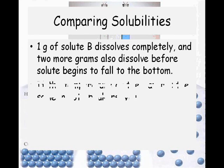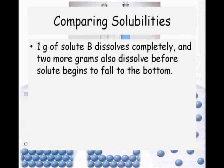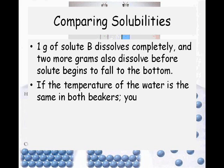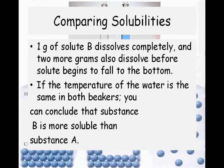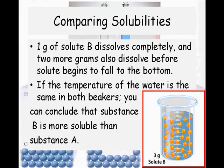However, if you have the same solvent and you change the solute — you have one gram of solute B and it dissolves, and then two more grams also dissolve before anything falls to the bottom of the beaker. So if the temperature of the water is the same in both beakers, you can conclude that substance B is more soluble than substance A, because we can add more of it to the solvent.